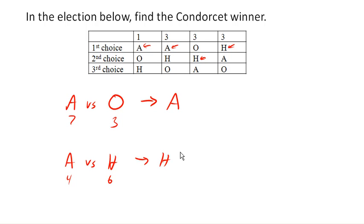How about O versus H? So if we look at O versus H, O is preferred here. H is preferred here. O and H. So we have 1, 2, 3, sorry, 1 and 3 is 4 people preferring O. And 6 people preferring H. So H is preferred.